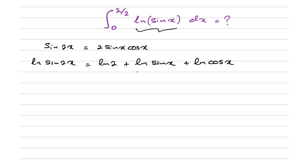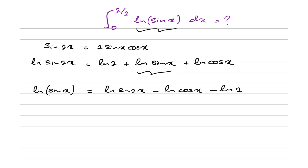Here we need to integrate natural log of sin(x), so let's isolate it. Natural log of sin(x) is equal to natural log of sin(2x) minus natural log of cos(x) minus natural log of 2. Then we integrate both sides from 0 to π/2.